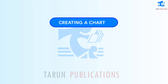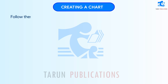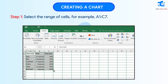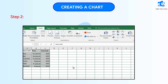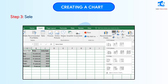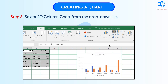Creating a Chart: Follow these steps to create a chart in Excel 2016. Step 1: Select the range of cells, for example, A1 to C7. Step 2: On the Insert tab, click on Insert Column or Bar Chart from the Charts Group. Step 3: Select 2D Column Chart from the drop-down list. The chart will appear in the Excel sheet.